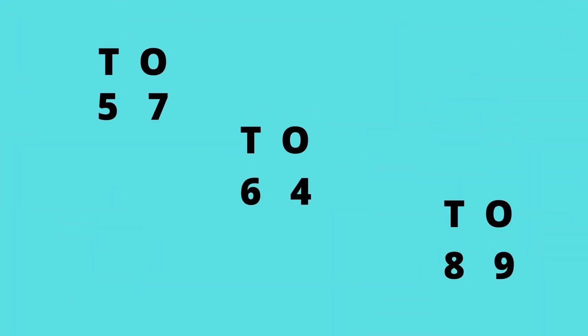Have a look at these numbers and identify ones and tens. In 57, seven is at the place of ones and five is at the place of tens. Similarly, in 64, four is ones and six is tens.